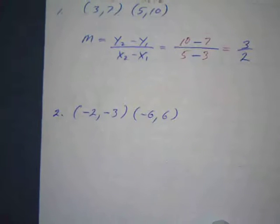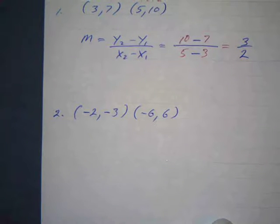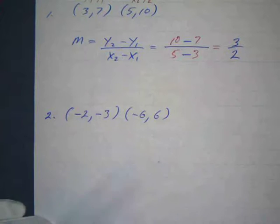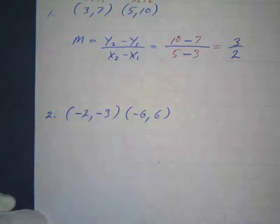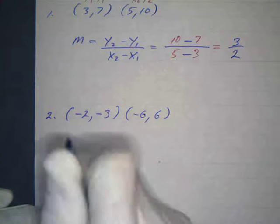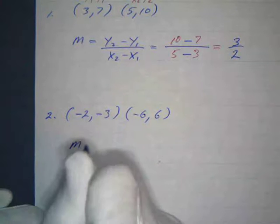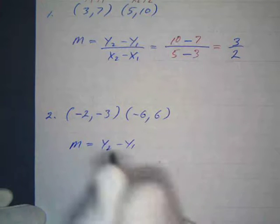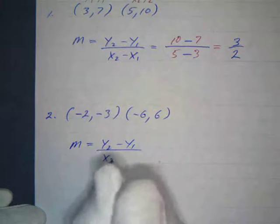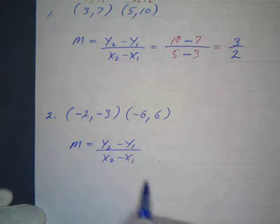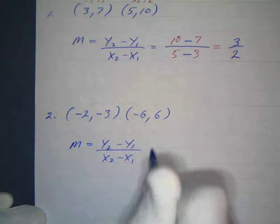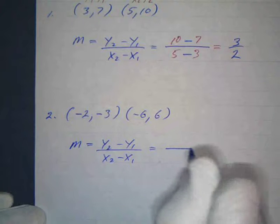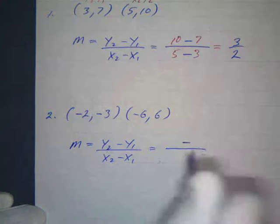All right, now here's one with some negative signs in the data and this is where this technique comes in handy. So again I want to find the slope of the line that goes through these two points. So first of all I will write my formula. M equals Y2 minus Y1 all over X2 minus X1. And that's the change in Y over the change in X.